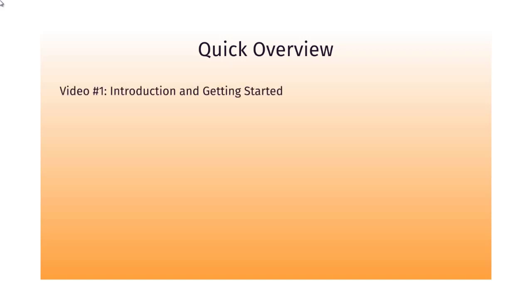Now I want to talk about the video course itself and give you a quick overview. This is video number one. Video number two is the seven steps checklist. Videos three through eight will dive deeper into those seven crucial variables that are very important in trying to get your images ranked on Google image search. This is not an exact 100% guaranteed system, but it is based on what we have seen over the years.